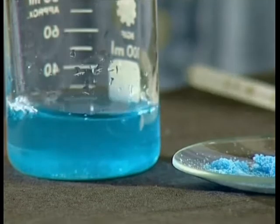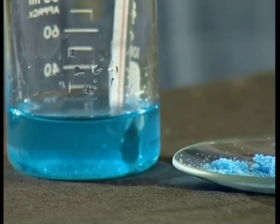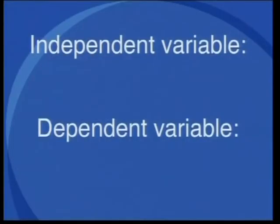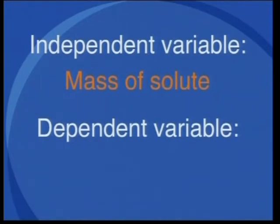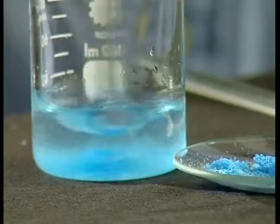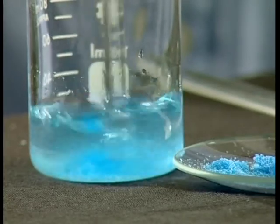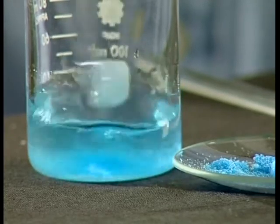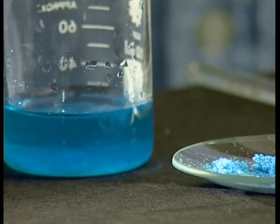Remember to record the temperature after each addition. What are the independent and dependent variables in this experiment? This time, the mass of the solute is the independent variable, and the temperature is the dependent variable. As always, we need a table to record our results. This is how my table would look. Let's look at the experiment. Notice that the color of the solvent changes when I add the solute to it.